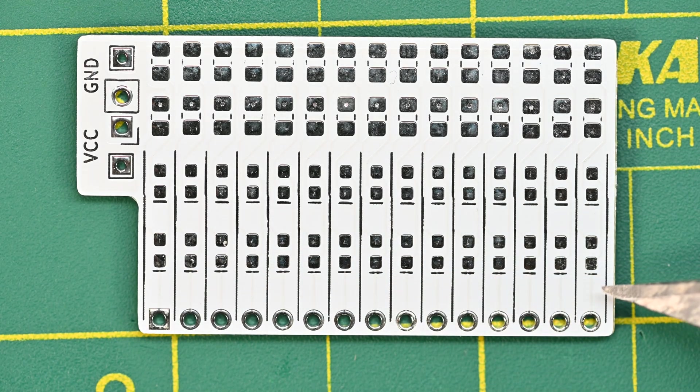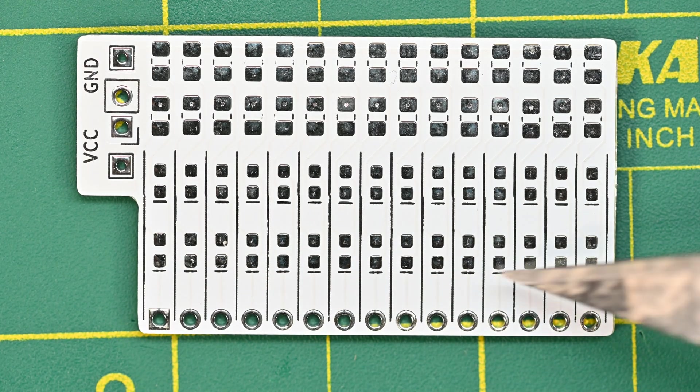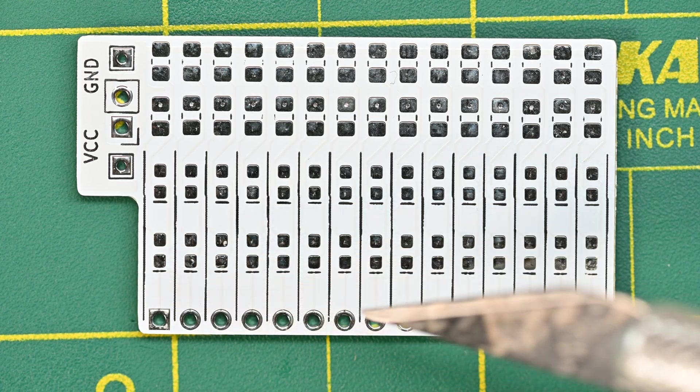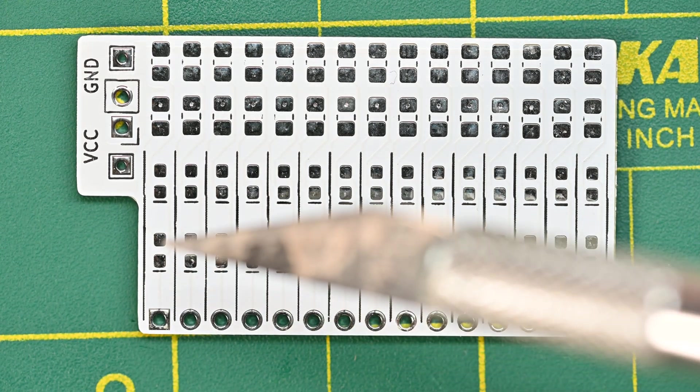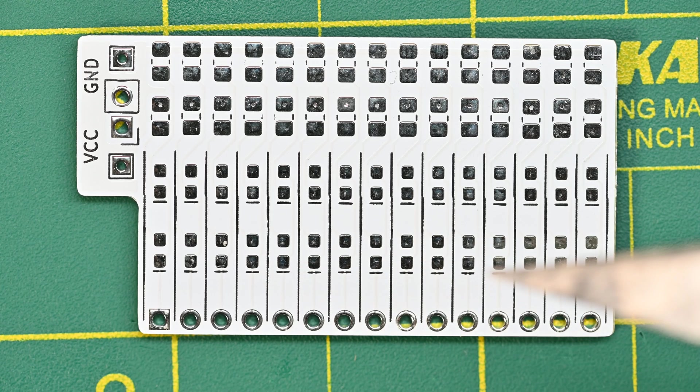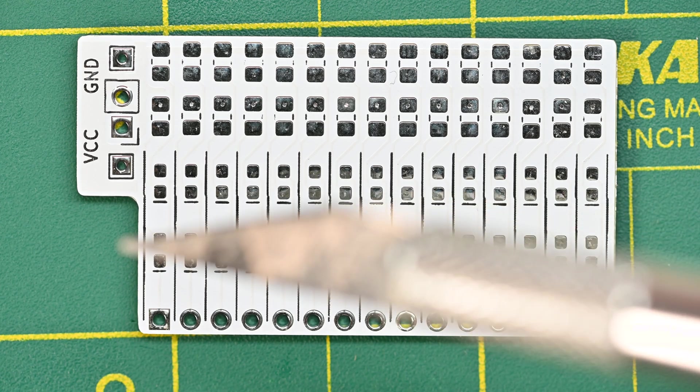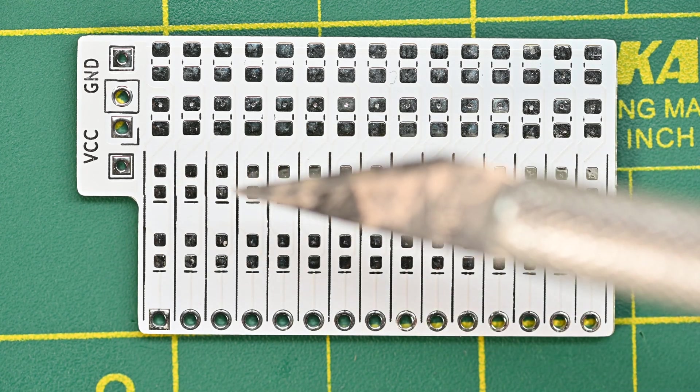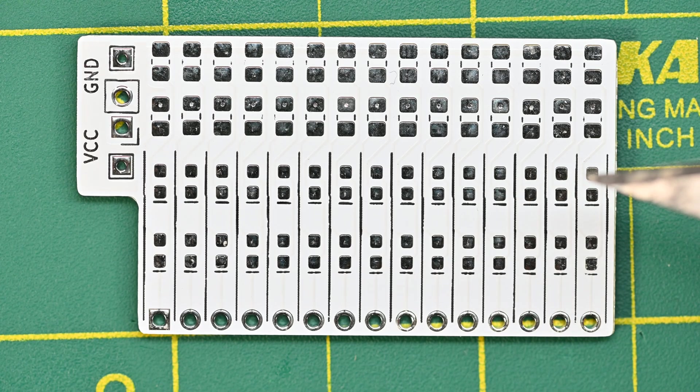These are 0603 size, so they're very small. These will indicate a low on your micro. Over here you have a row of LEDs, these ones will indicate a high, still 0603.